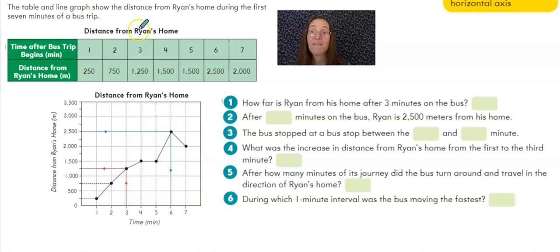In this line graph, we have the information presented in a table, but also down here in the graph. And once more, we're going to want to pay attention to titles and labels. The title for both the table and the line graph are the same, the distance from Ryan's home. But then in the table, we have the time after the bus trip begins, which is here on the top row. And I notice that that's been added down here at the bottom in the horizontal x-axis.